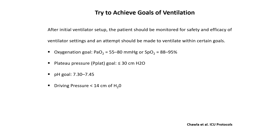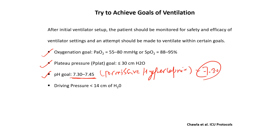The ventilation goals: oxygenation as discussed, plateau pressure ≤30 cmH2O, and pH goal down to 7.30 — that is permissive hypercapnia. If pH drops below 7.30, increase respiratory rate up to 35. If pH is less than 7.15, add bicarbonate. Driving pressure is a very important concept: always keep driving pressure less than 14–15 cmH2O. Driving pressure is increasingly useful and will help reduce ventilator-induced lung injury; there is a lot of ongoing trial data.